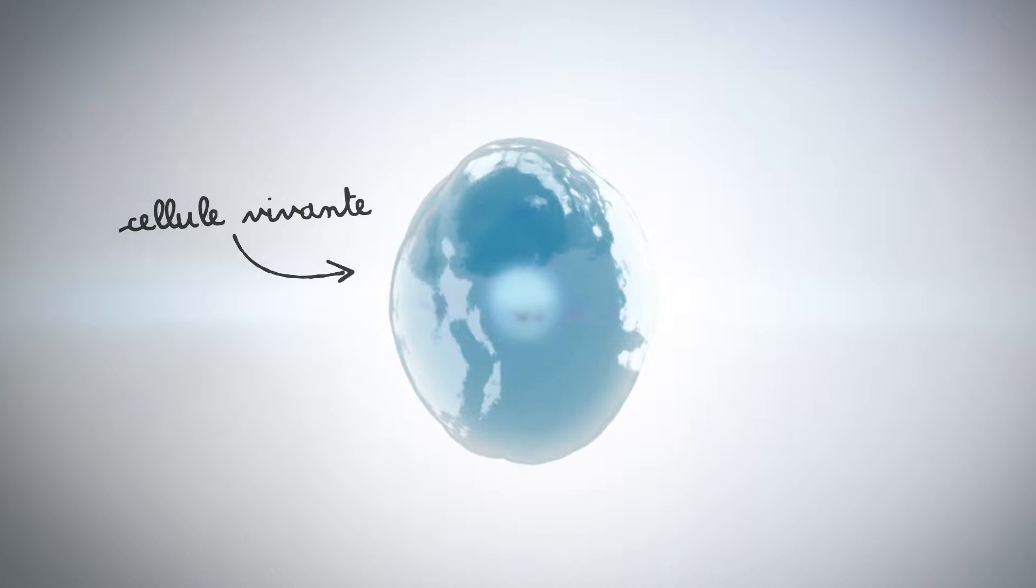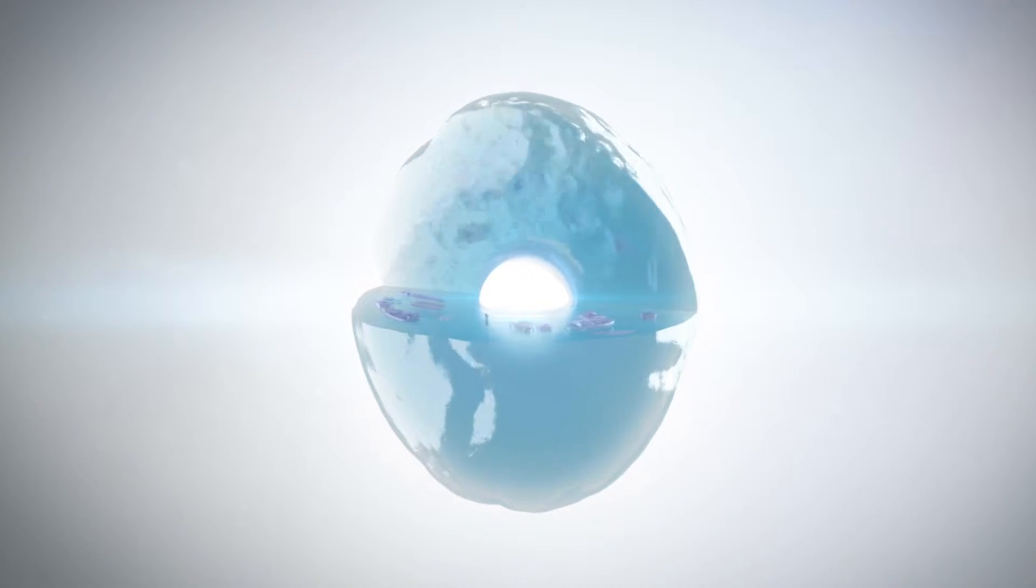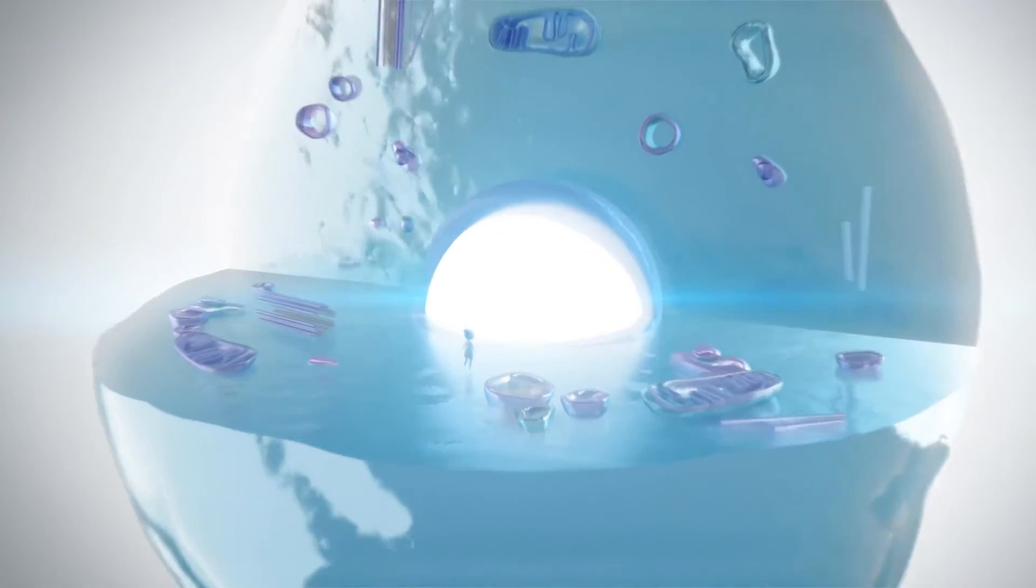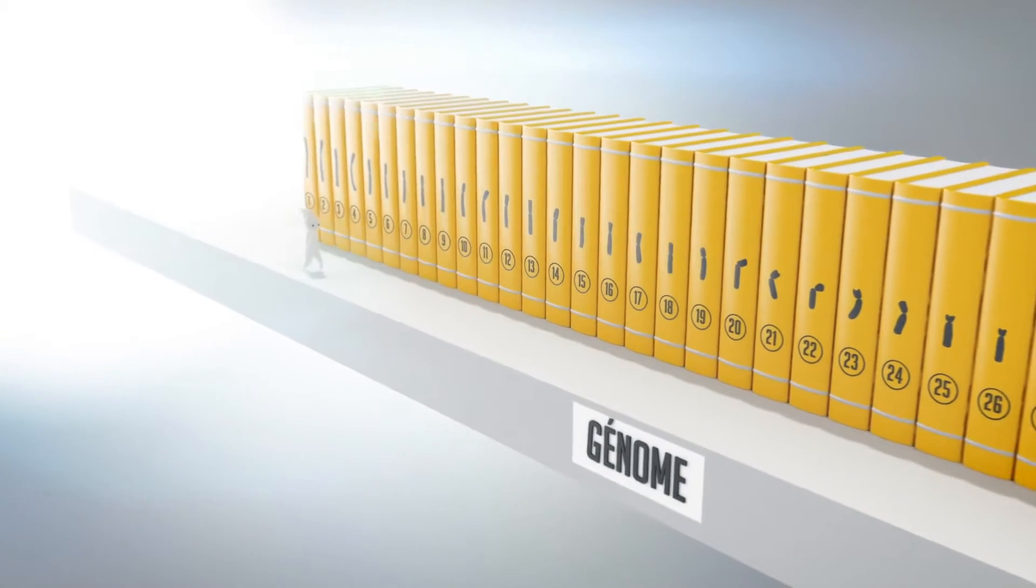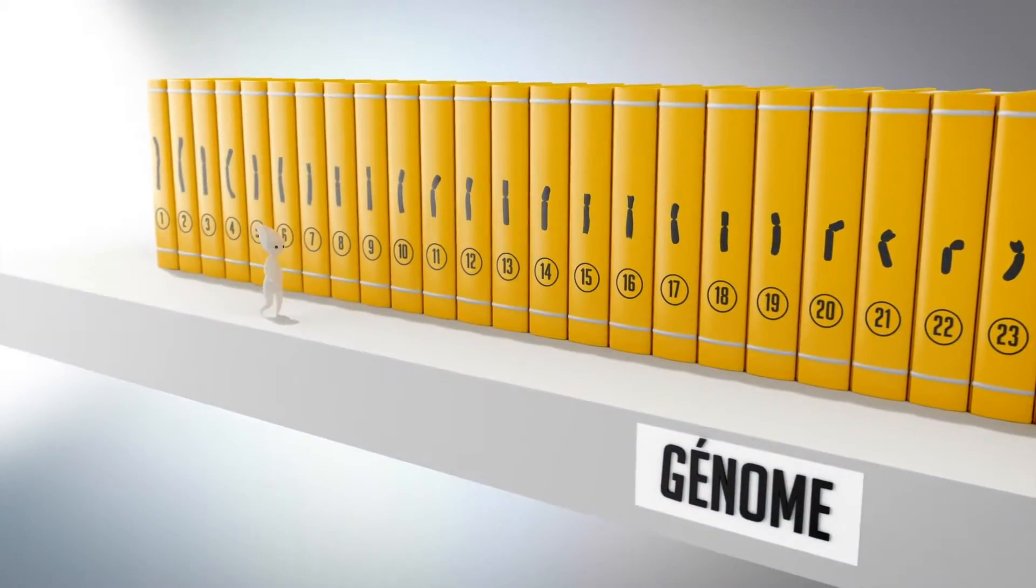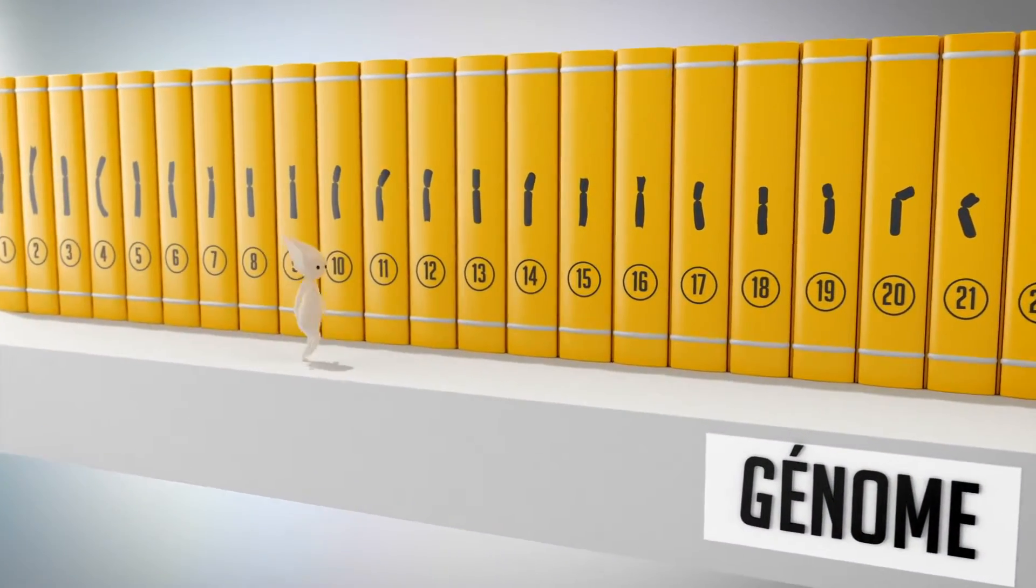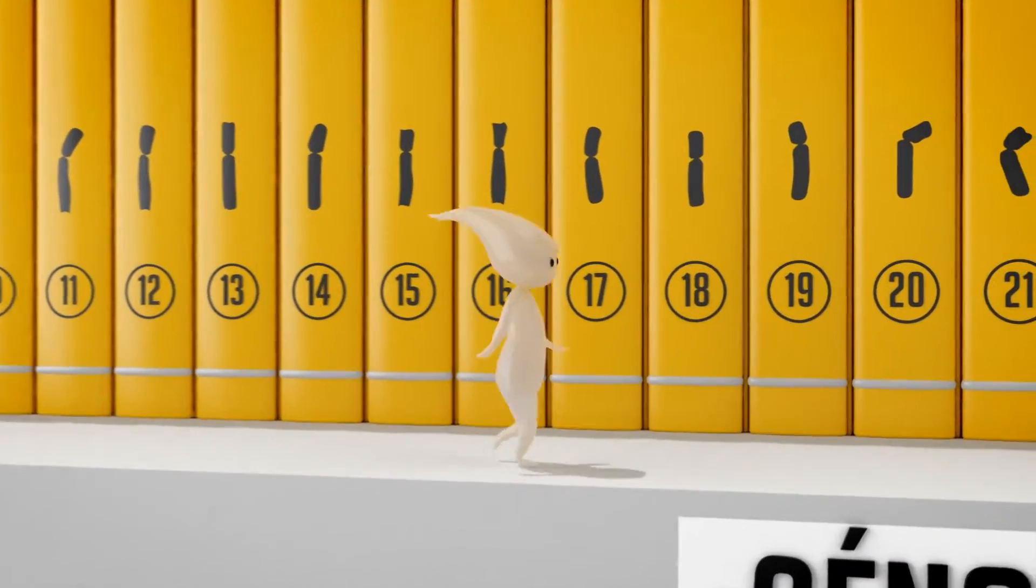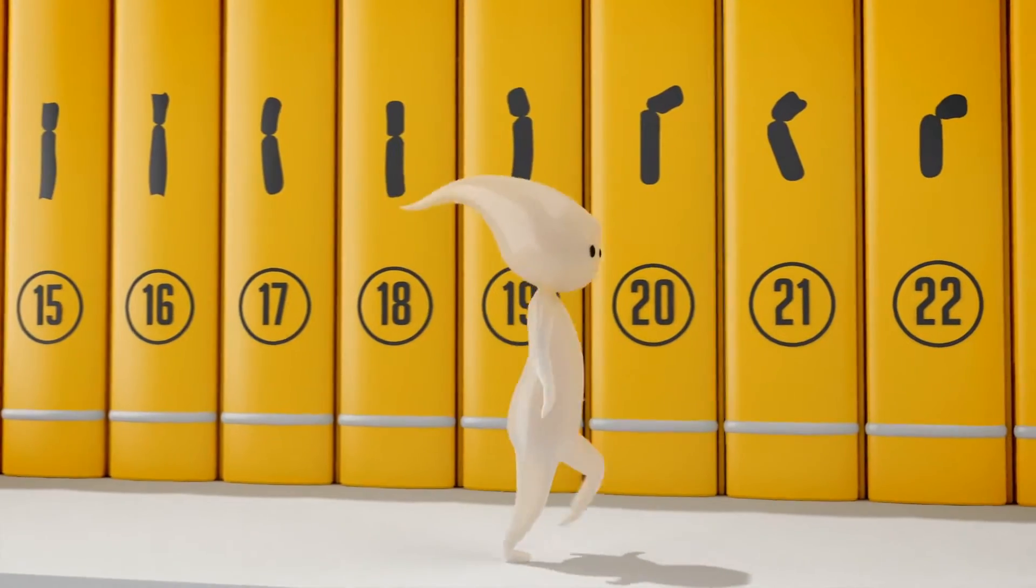Le génome est unique à chaque personne. Il se retrouve dans le noyau de chacune des milliards de cellules du corps humain. Il est l'ensemble des instructions nécessaires pour créer un être vivant, tel une collection de livres de recettes. Si l'on conserve l'analogie d'une collection de livres, le génome est composé de 46 volumes, que sont les chromosomes.